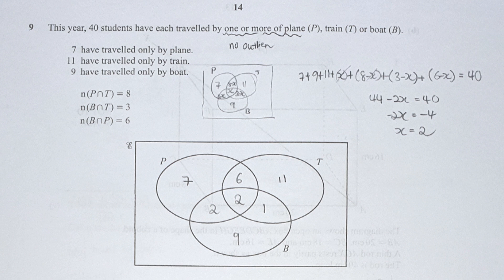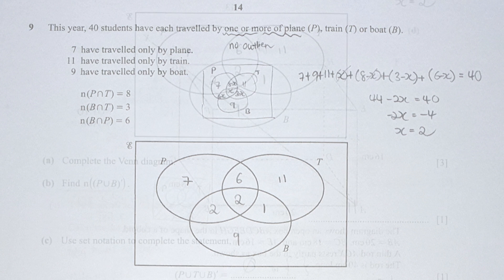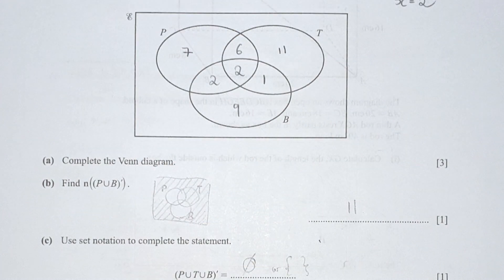Find the number in P union B and everything other than it. I shaded down the relevant region, and the only value is 11.